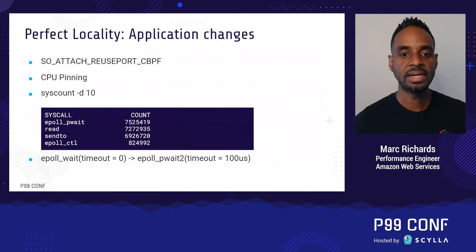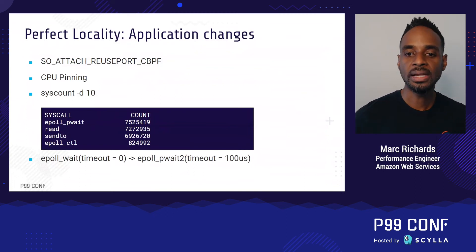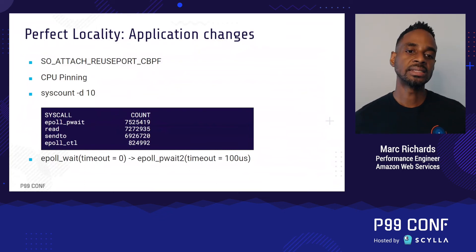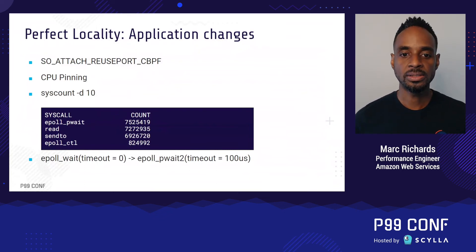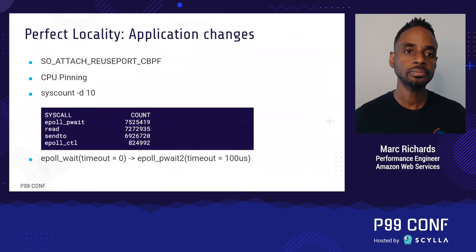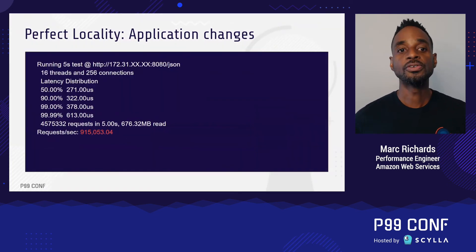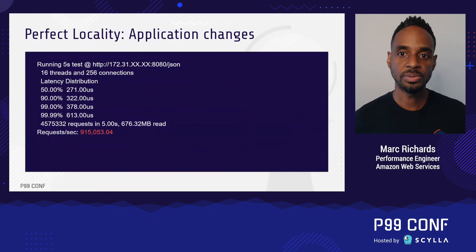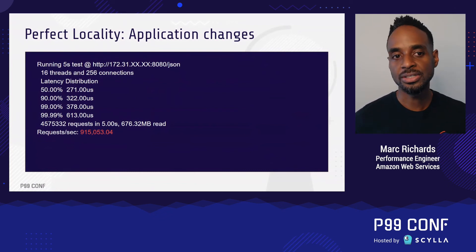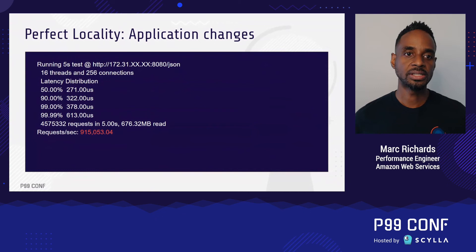I needed to change that, but to strike a balance between the framework's latency expectations and my performance goals, I settled on a timeout value of 100 microseconds. These changes were also done in a private fork of C-Star. With those three changes in place, performance moved from 726,000 requests per second to 915,000 requests per second — a solid 26% jump and much more in line with expectations.